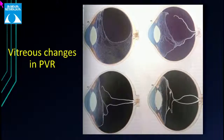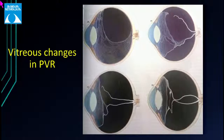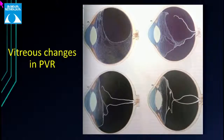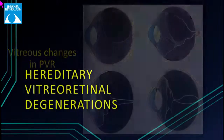In proliferative vitreoretinopathy with total retinal detachment, the vitreous cortex is densely adherent to the retinal surface, pulling the retina to form a narrow funnel, eventually leading to a closed funnel configuration with transvitreal sheets of traction.